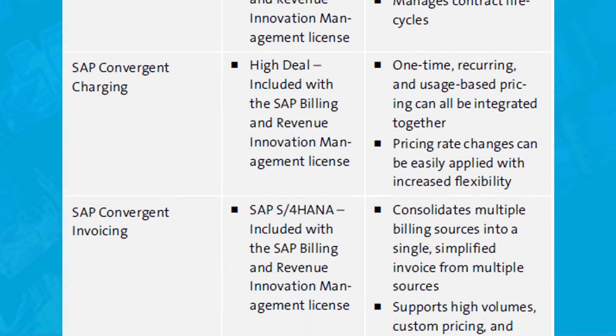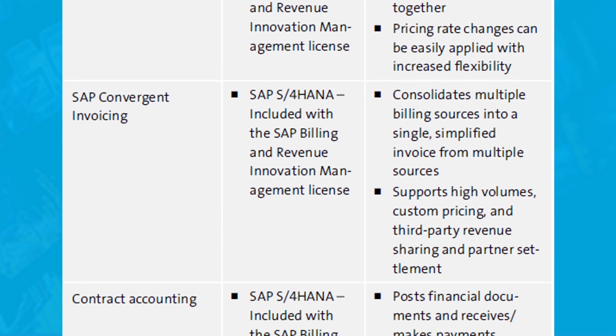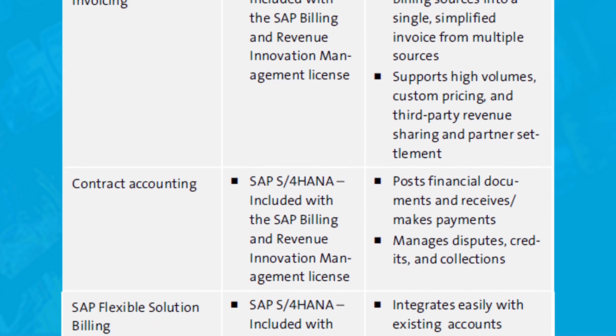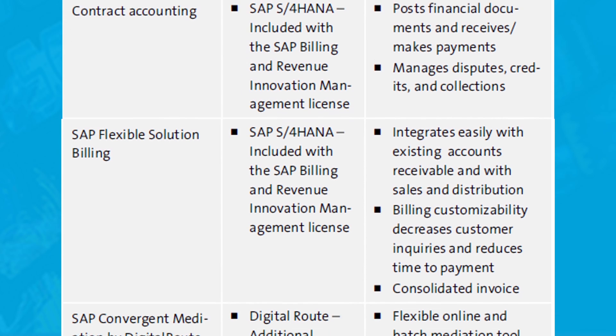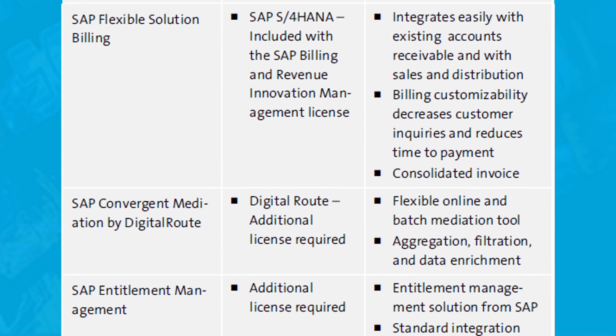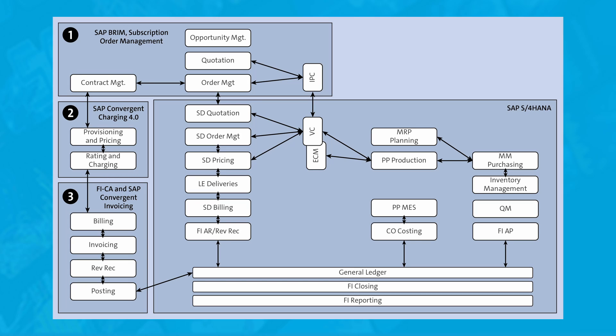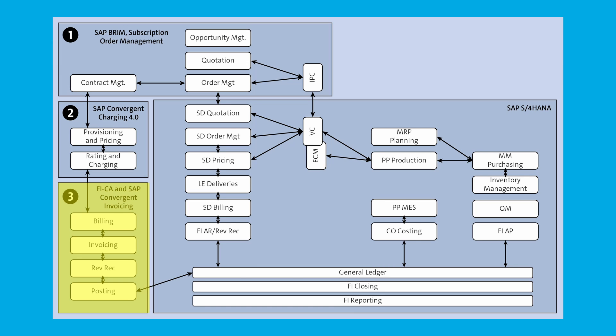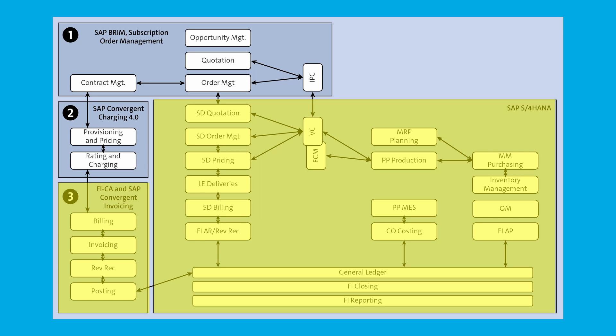Here is a breakdown of the SAP Brim components. SAP Brim solution components reside both as areas within SAP S/4 HANA and as standalone modules that integrate with SAP S/4 HANA. This figure illustrates how each core component of SAP Brim resides within the end-to-end solution landscape. SAP Brim subscription order management and SAP Convergent Charging reside in different instances because they are standalone applications. On the other hand, SAP Convergent Invoicing and FICA are part of the SAP S/4 HANA solution and come out of the box with SAP S/4 HANA.